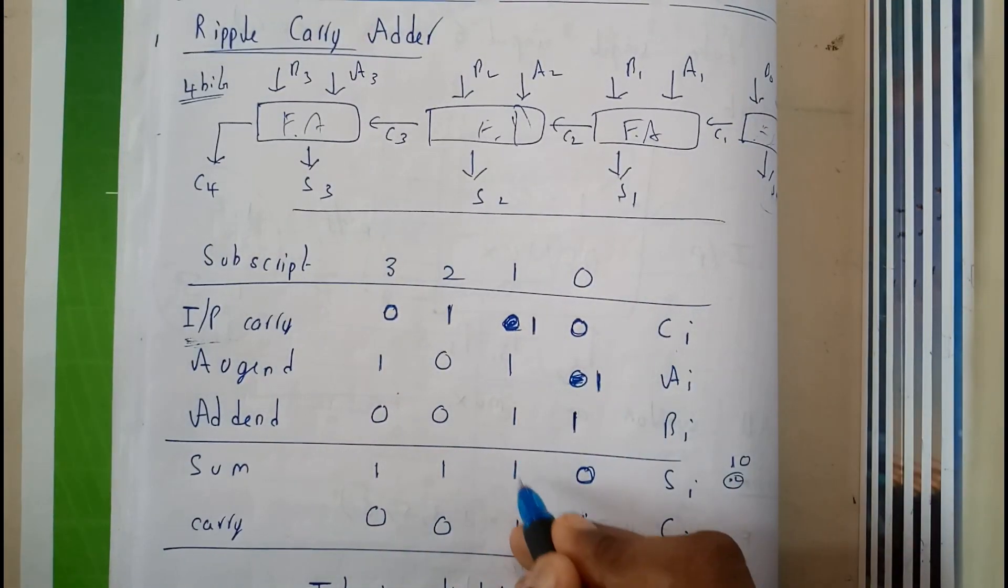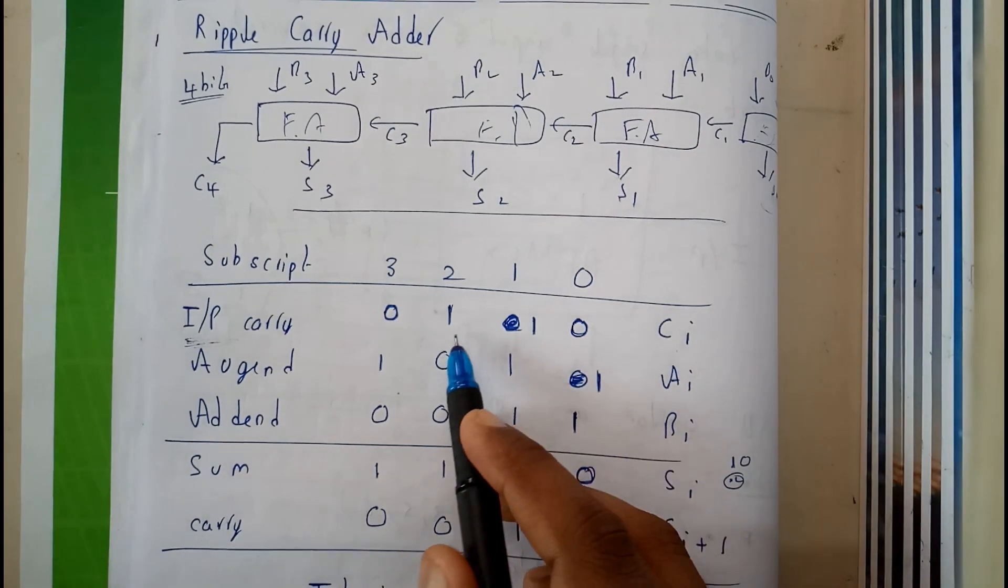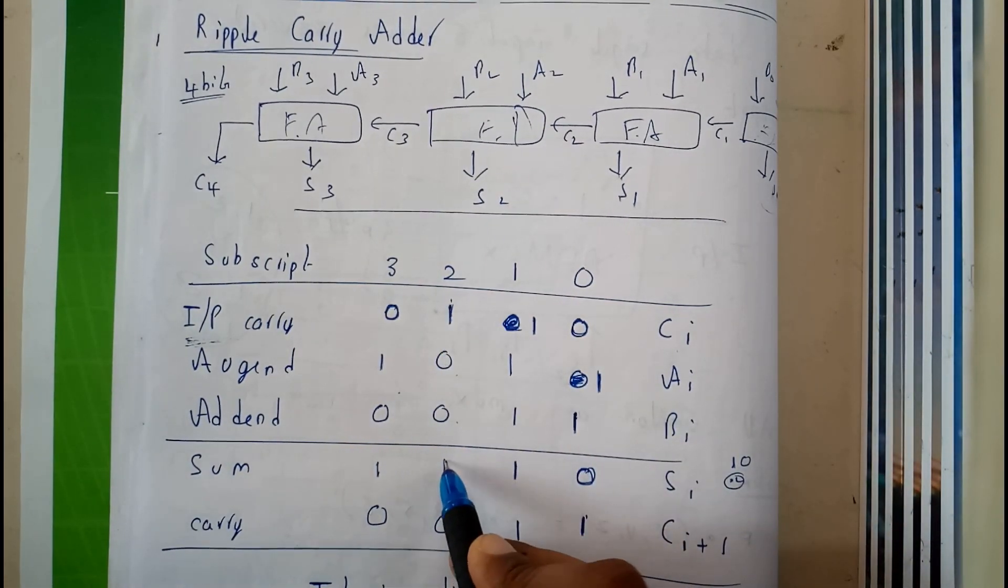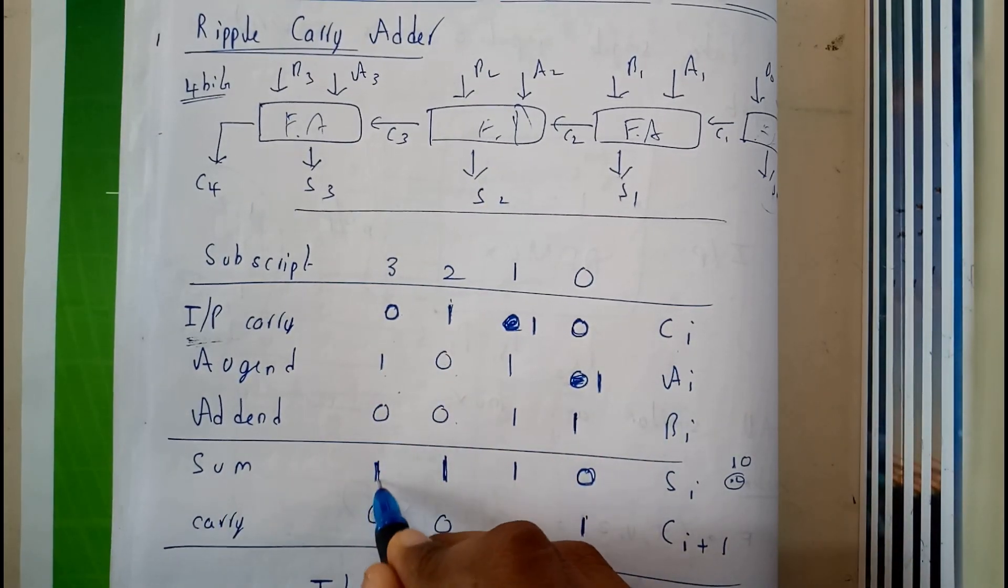So 1 plus 1 plus 1, that is 3. 3 will be represented by 1 1. So 1 0 0, 1 plus 0 plus 0, that is nothing but 1, that's the value of sum. 0 plus 1 plus 0, that is nothing but sum 1.